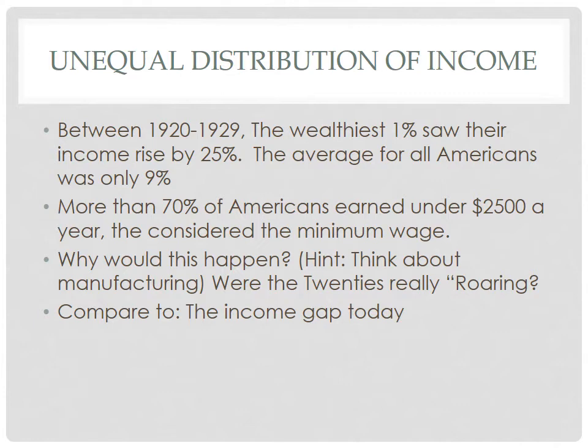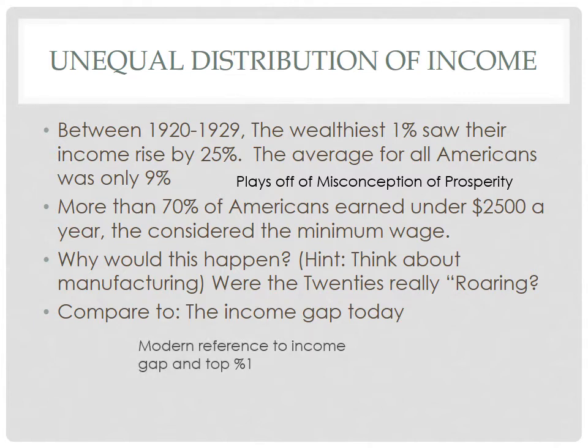Here are some stats: the minimum wage at that time was $2,500 a year and 70% of Americans earned at or below that. Think about 70% of Americans earning $8.15 an hour — that's not prosperity. That large percentage of the wealthy was showing a prosperity that wasn't there. Just get the idea that there was an income gap falsely represented by the supposed success of the American economy in the 20s.